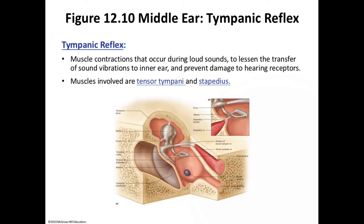The tympanic reflex: the ossicles transfer vibrations from the tympanic membrane to the oval window, and the large surface of the tympanic membrane funnels force onto the much smaller area of the oval window, strengthening the pressure. The pressure per square millimeter that the stapes applies at the oval window is about 20 times greater than the sound waves exerted on the tympanic membrane. The middle ear also has two small muscles — the tensor tympani and the stapedius — which are the effectors in the tympanic reflex. Their contractions during loud sounds lessen the transfer of vibrations to the inner ear and prevent damage to the hearing receptors.